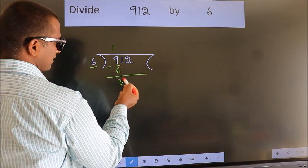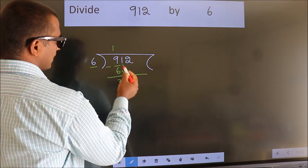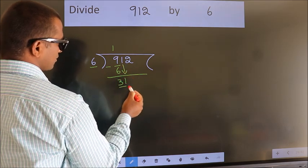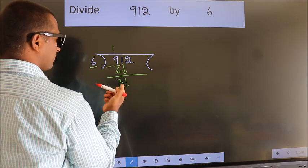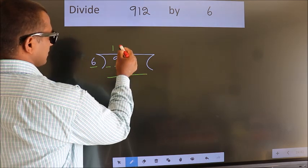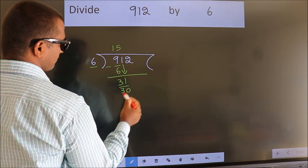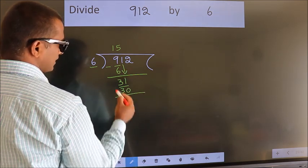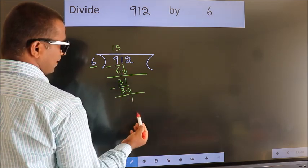After this bring down the beside number. So 1 down. So 31. A number close to 31 in 6 table is 6 times 5, 30. Now we subtract. We get 1.